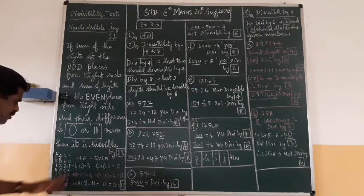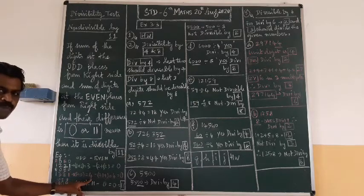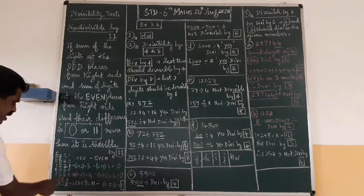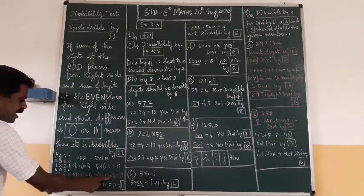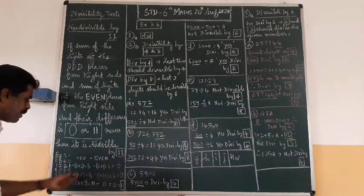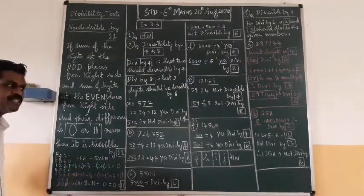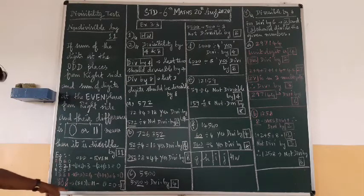Second example: 1331. From the right, 1st place is odd, 3rd place is odd — digits 1 and 3, so 1 + 3 = 4. Even places: 2nd and 4th — digits 3 and 1, so 3 + 1 = 4. Odd minus even: 4 − 4 = 0. Getting zero means it is divisible by eleven.